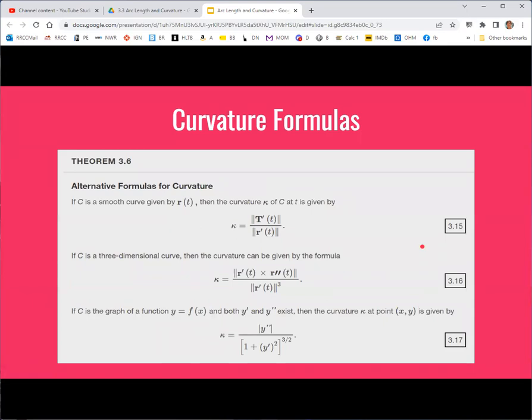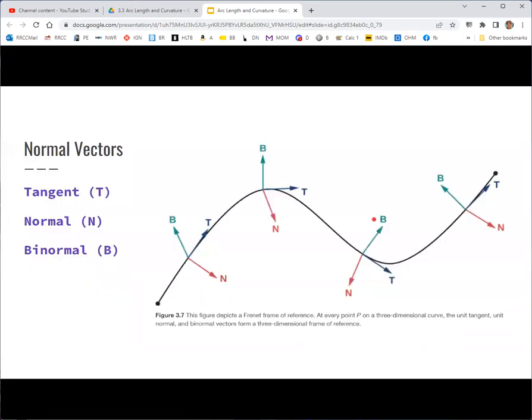Some alternative formulas that we might actually use to find the curvature, there are three of them. You may have seen this bottom one because it's just written in terms of y being a function of x. So if the curve is just y is a function of x and you know y, y double prime, and you can find those easily, then you may just want to use this one. But if you have vector valued functions, then you really have two options. You can see they both involve the vector function r and its derivatives and magnitudes. This one is a cross product. This one has the unit tangent vector function. So we'll see how to get those, how to choose which one and how to calculate those in the methodology.